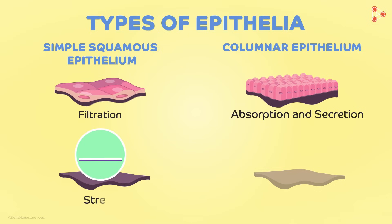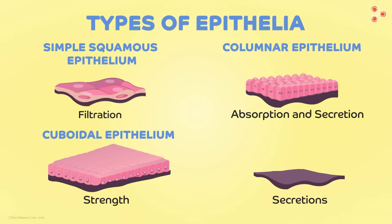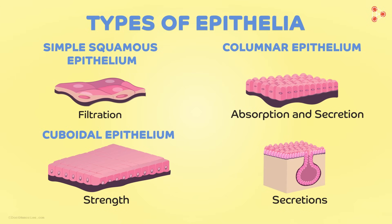At times, we need strength or support along with a larger surface area. In this case, we slightly change the structure to cube-like cells and form the cuboidal epithelium. Lastly, we have certain organs that need specialized secretions, so we modify a few cells to perform secretion of specific chemicals like hormones or enzymes. These are called the gland cells, and the epithelium consisting of such cells is called the glandular epithelium.